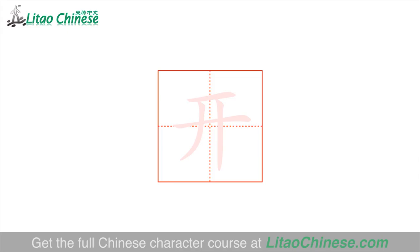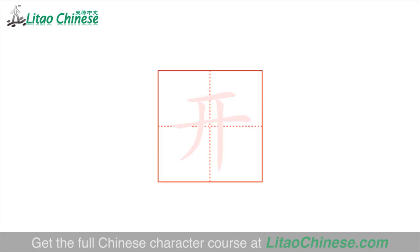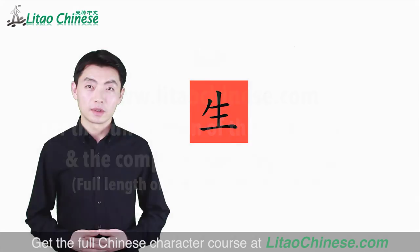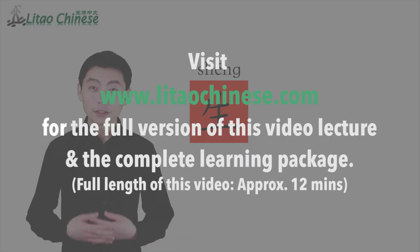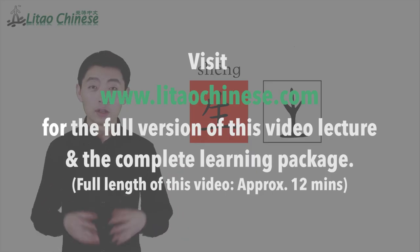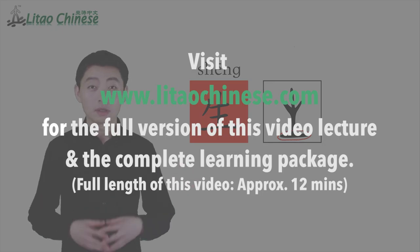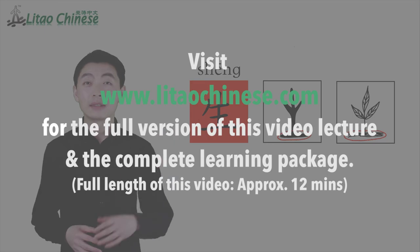Here is the correct stroke order of 开: 横, 横 — the second 横 is longer than the first one — then 撇 and 竖. Four strokes in total. 开 means 'to open.' The next character is 生. Remember to visit LitaoChinese.com for the full version of this video lecture and the complete learning package.